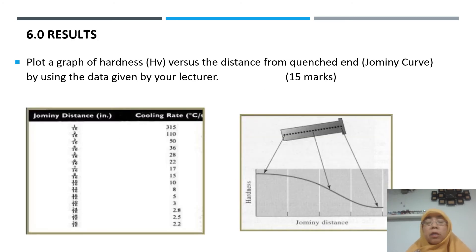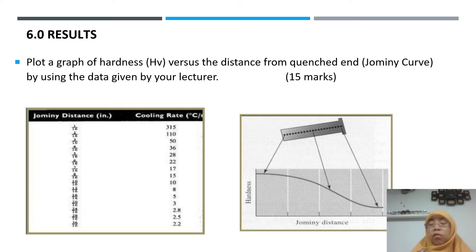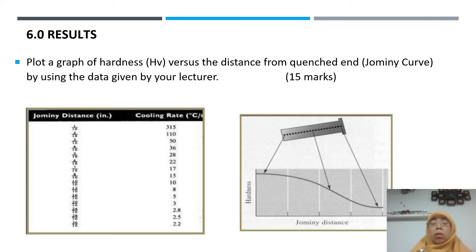After the experiment, we will give you the data for the results. From the data, you will plot a graph of hardness versus distance from the quench end. You can see the sample and the quench end, and you will plot the graph from zero up to the full Jomini distance. All data will be provided, but make sure you plot it by hand on your own paper — do not use a computer or Excel. We need the originality of your work. If you have graph paper, that is very good; if not, you can still sketch the data on plain paper.